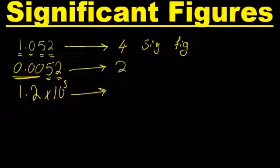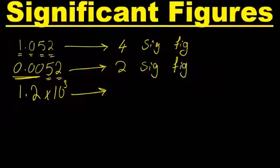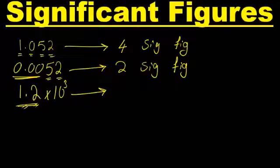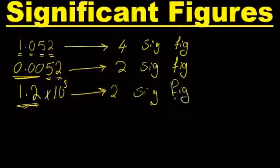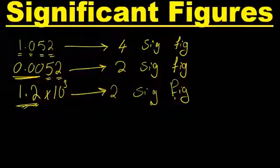What about the last one? In scientific notation we have one and two — we just count these numbers, not the ten to the power of three. So that's two significant figures as well. All right, so now let's study the rules of significant figures to be able to apply them in addition, subtraction, multiplication, and division.